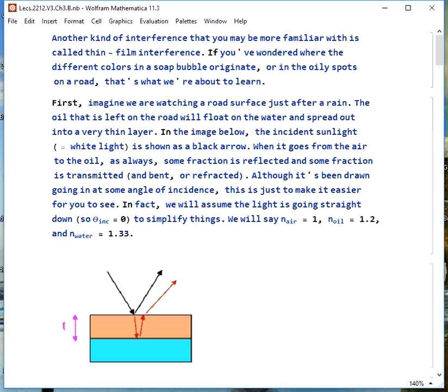The way to analyze this, first if we imagine we're looking at a road surface just after it rains, there's usually some oil left behind. That will float on top of the water and the water is of course on top of the road. The incident sunlight, which is white light or all colors, comes in and it's drawn here as a black arrow.